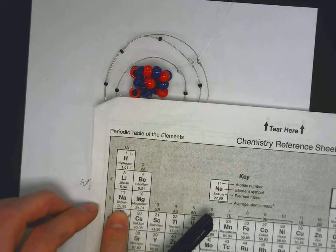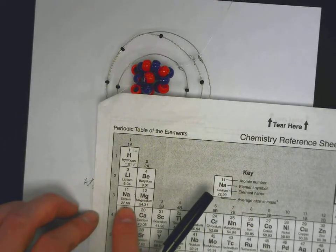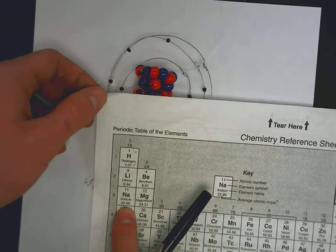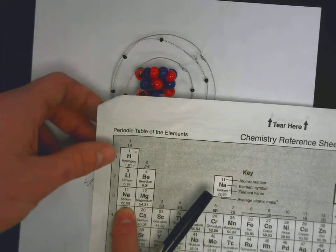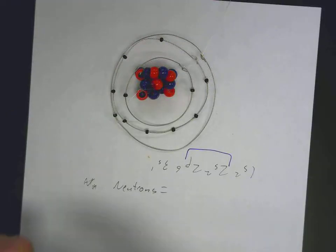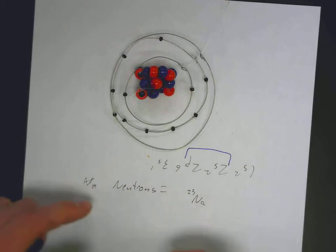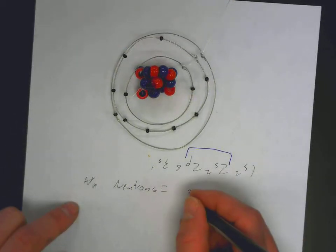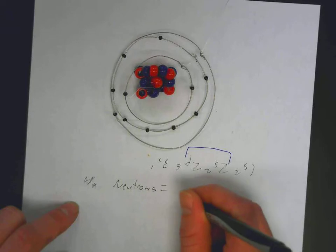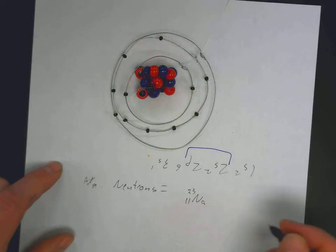For sodium, that rounds to 23 for the average atomic mass. So the most abundant isotope we would estimate to be sodium mass number 23. The mass number minus the atomic number, as for sodium which is 11, gives you the number of neutrons. So we know then that we have 12 neutrons.